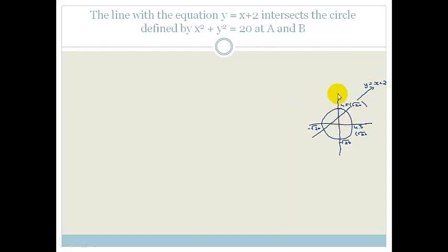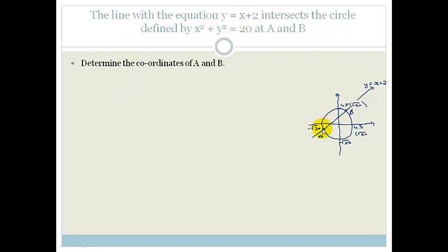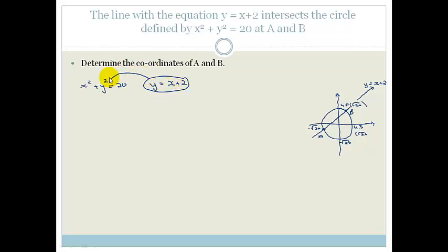Now that I can picture what we've got, let's see what the equations are. The first question is: determine the coordinates of A and B, which are the points where these two cut. We need to realize that we can simultaneously equate them. How do you find where two lines cut? We have to let something be equal to another thing. We've got x² + y² = 20, and we also have y = x + 2. So I'm going to substitute x + 2 into the y value.